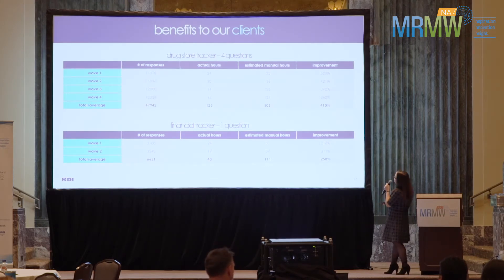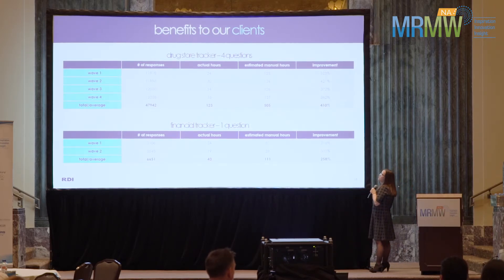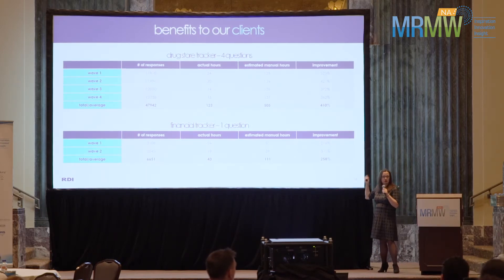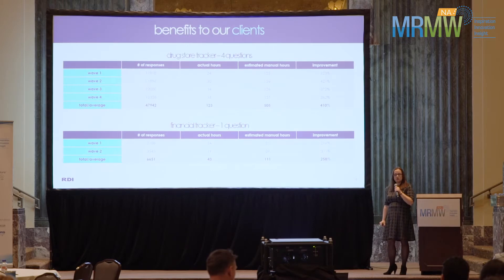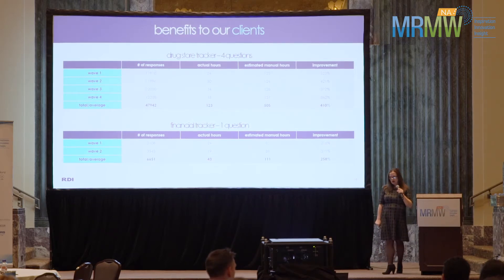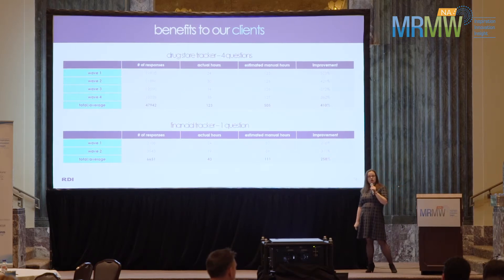Here are a couple of examples from traditional market research studies of how this has helped. In the first example, we have a drugstore tracker with about 50,000 responses to code. We estimated that if we had done this manually it would have taken about 500 hours. It took us just over 100 hours — 120 hours. For a financial tracker with about 7,000 responses, we estimated it would have taken over 100 hours; it took us 40.